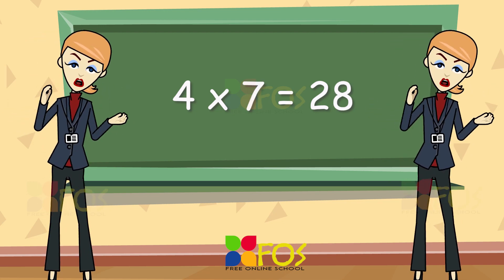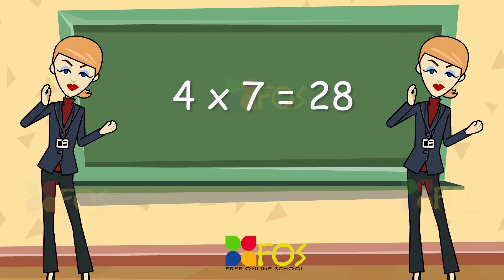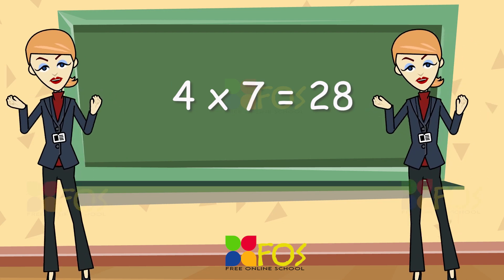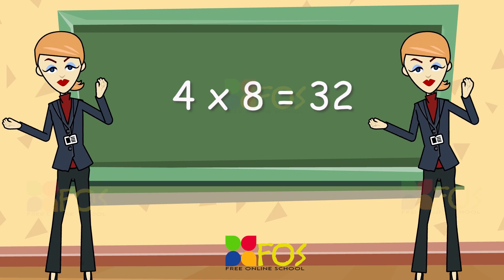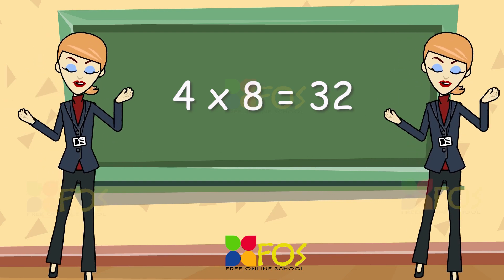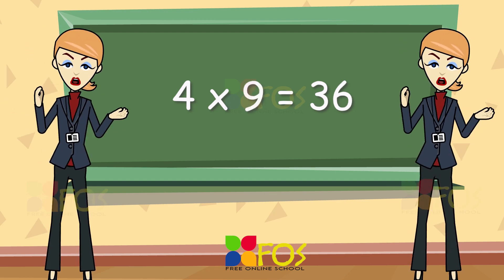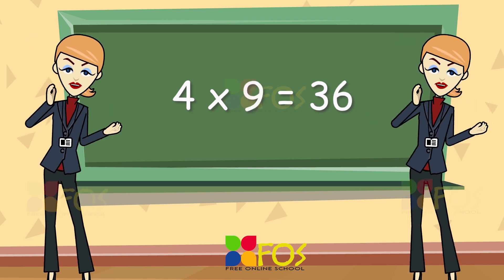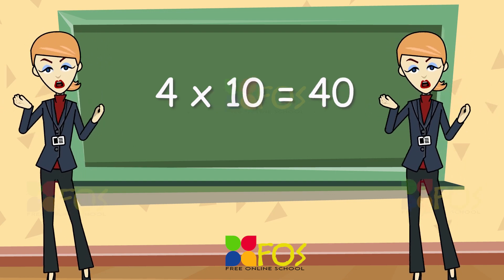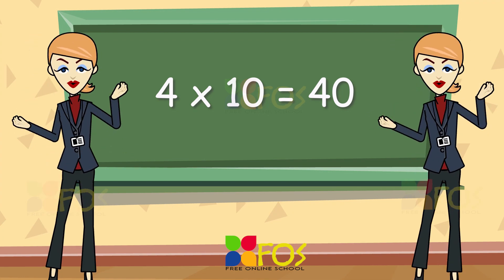Four sevens are twenty-eight. Four eights are thirty-two. Four nines are thirty-six. Four tens are forty.